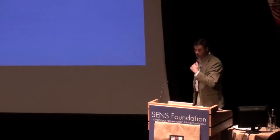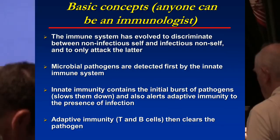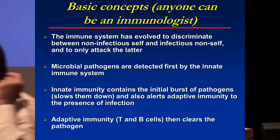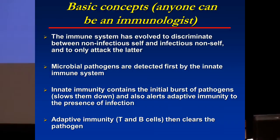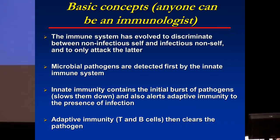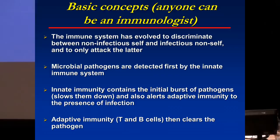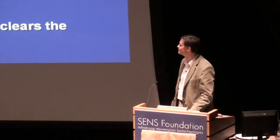We will start by doing a little bit of Immunology 101. The immune system is there to defend against infection. In a fancy manner, this is the system that evolved to discriminate between non-infectious self, which it should not attack, and the infectious non-self that it should attack. We have two kinds: the innate immune system, evolutionarily ancient and conserved, which first detects microbial pathogens and contains the initial burst of pathogen proliferation; and then alerts our adaptive immune system, which is much more precise and sophisticated, and really helps eradicate the pathogen down the line.